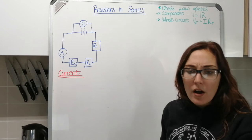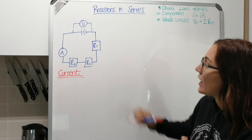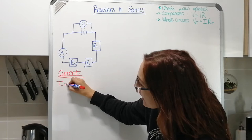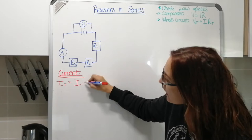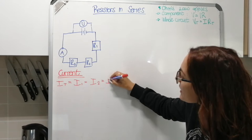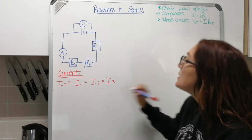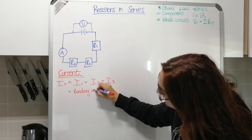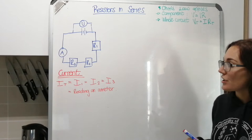In your notes it says there is only one pathway for the current to follow, so the current is the same at every point in the circuit. That means the total current — the current going through your battery — will be equal to the current going through resistor 1, which equals the current through resistor 2, which equals the current through resistor 3, and that will also be the same as the reading on the ammeter. So your current is the same everywhere in a series circuit.